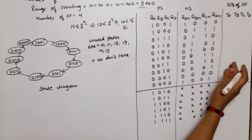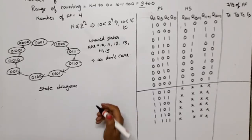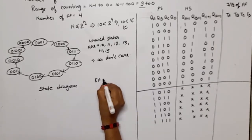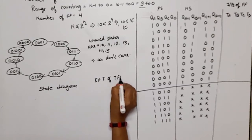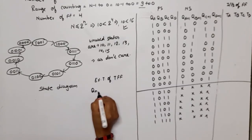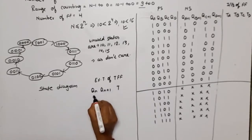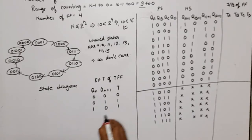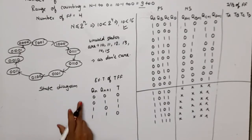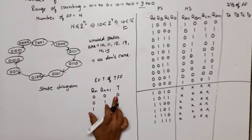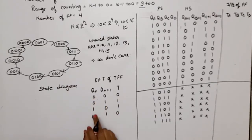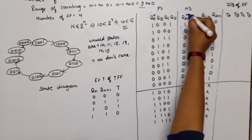Now we need to look at the excitation table of the T flip-flop. If Q and Q+1 are both 0, T is 0. If Q goes from 0 to 1, T is 1. If Q goes from 1 to 0, T is 1. If both are 1, T is 0. So the rule is: if present state and next state are the same, T equals 0; if they are different, T equals 1.